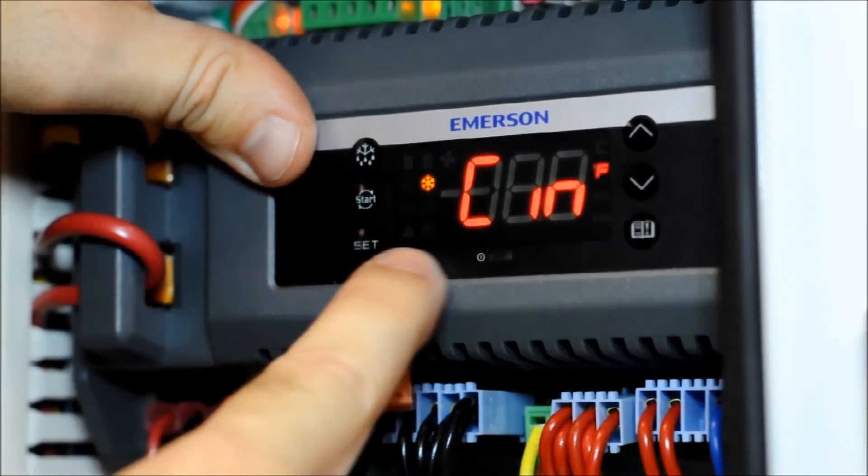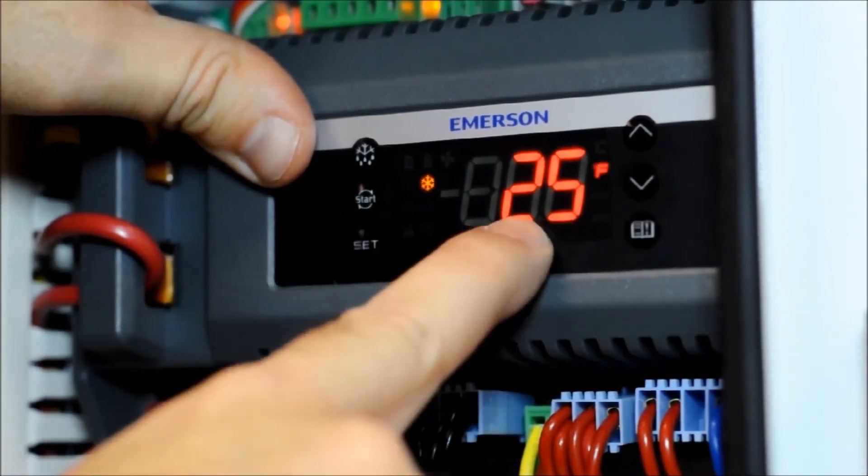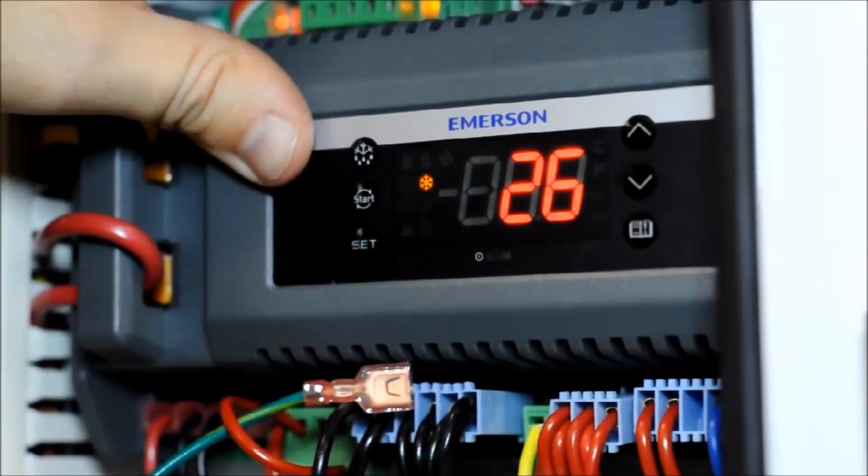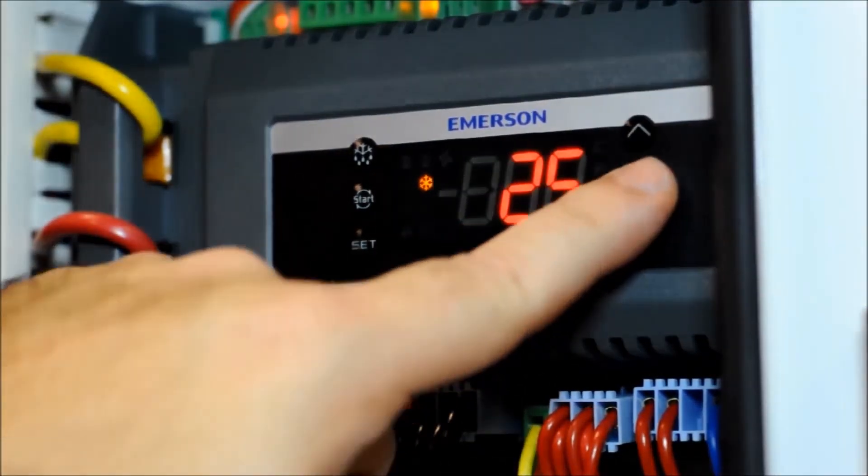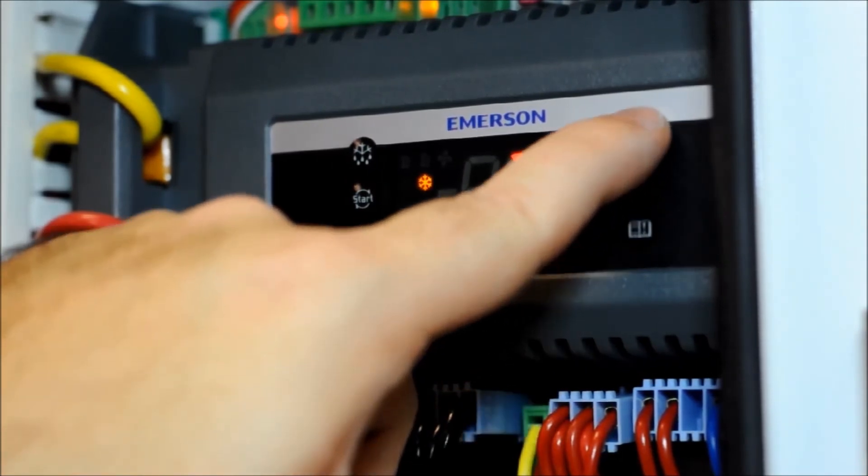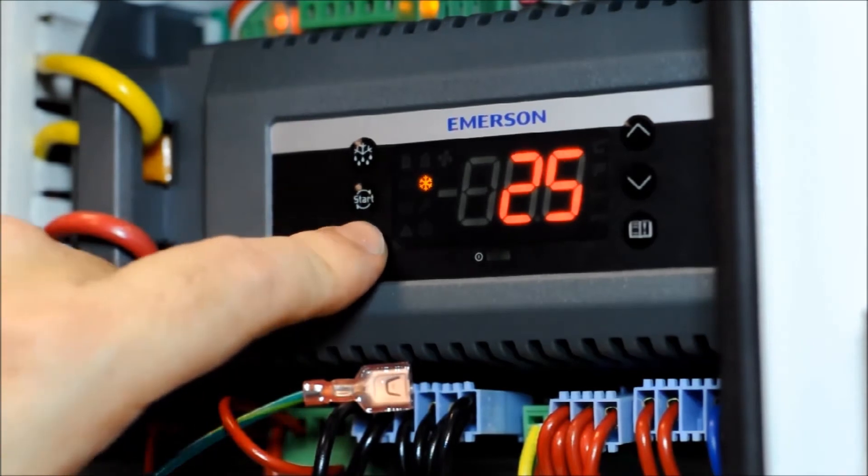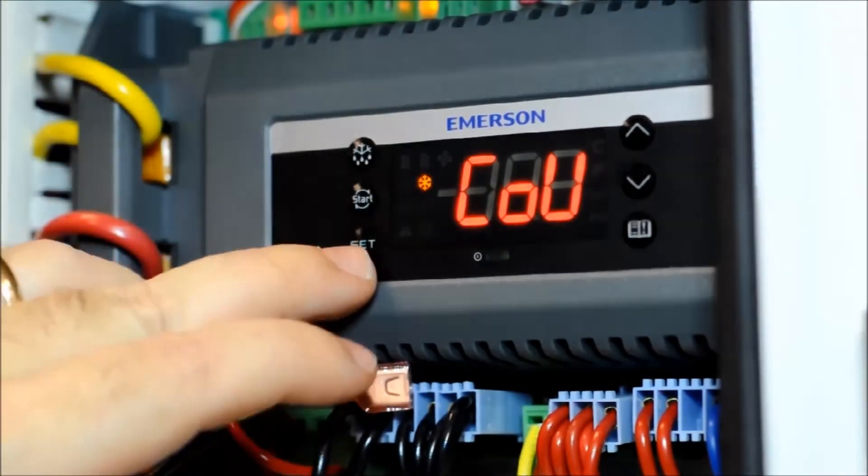The first parameter that will come up is the CIN. This is your cut in setting. So use the up and down arrow buttons to select whatever cut in pressure you like to see with the system. Once you have that, press the set button to accept it.